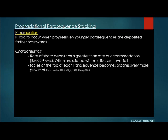Progradation is often associated with a relative fall in sea level. What normally happens is that at the top of each parasequence, the facies become progressively more proximal. So in a vertical section, you will have a facies above that has come from the land sitting on top of a facies below it that is more from the basinal area.